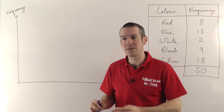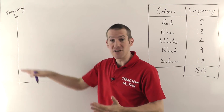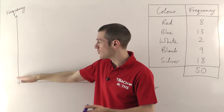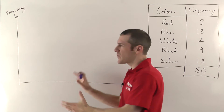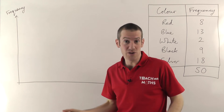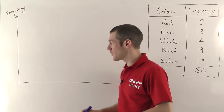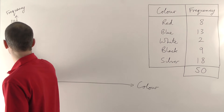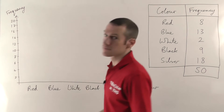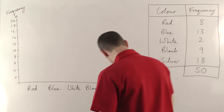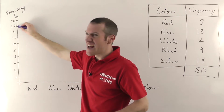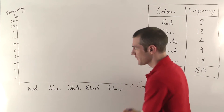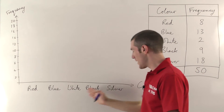On graph paper, you need to think about how many little squares you need for each number. You might be able to go one, two, three, four, five, six — or you might not have enough room for that and need to go in twos: two, four, six, eight, and so on. I don't have graph paper here, so I'm just going to go up in twos to save time. Okay, so we've got the numbers at the side — it goes 2, 4, 6, 8, 10, 12, 14, 16, 18, 20. And along the bottom we've got the labels for the different bars: red, blue, white, black, and silver.